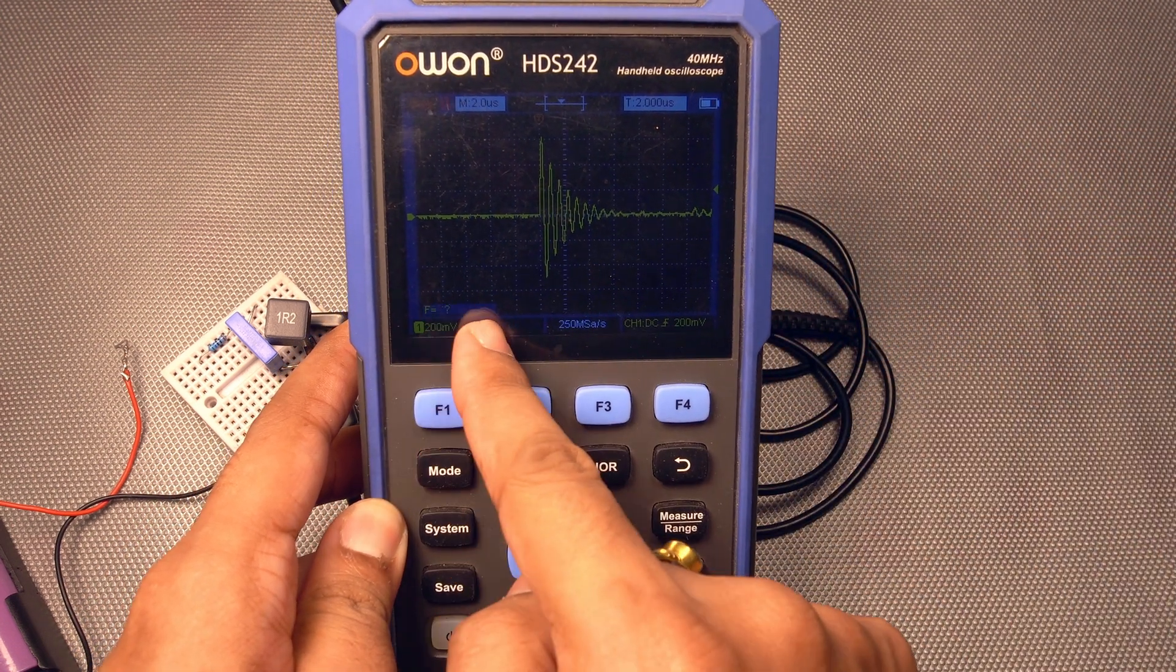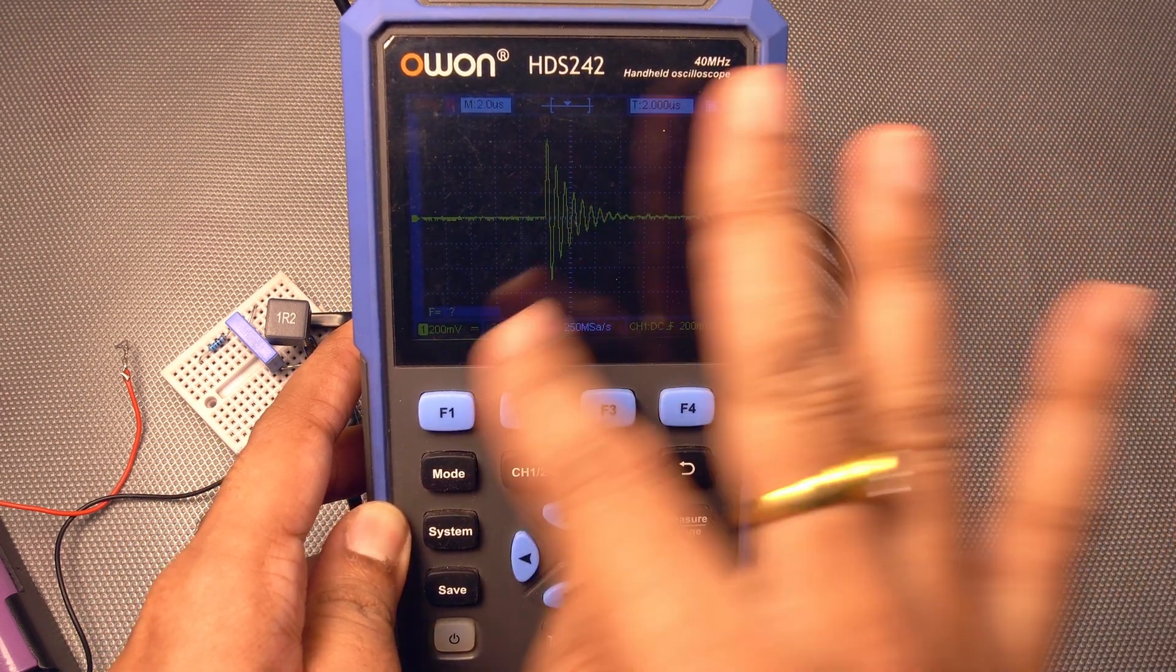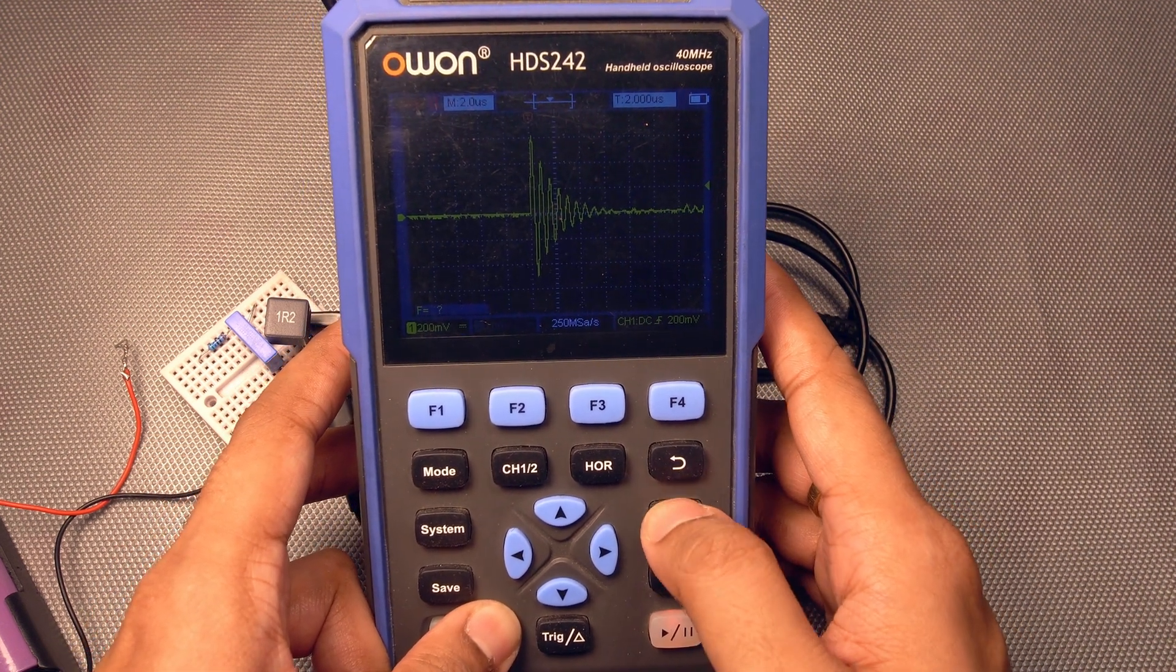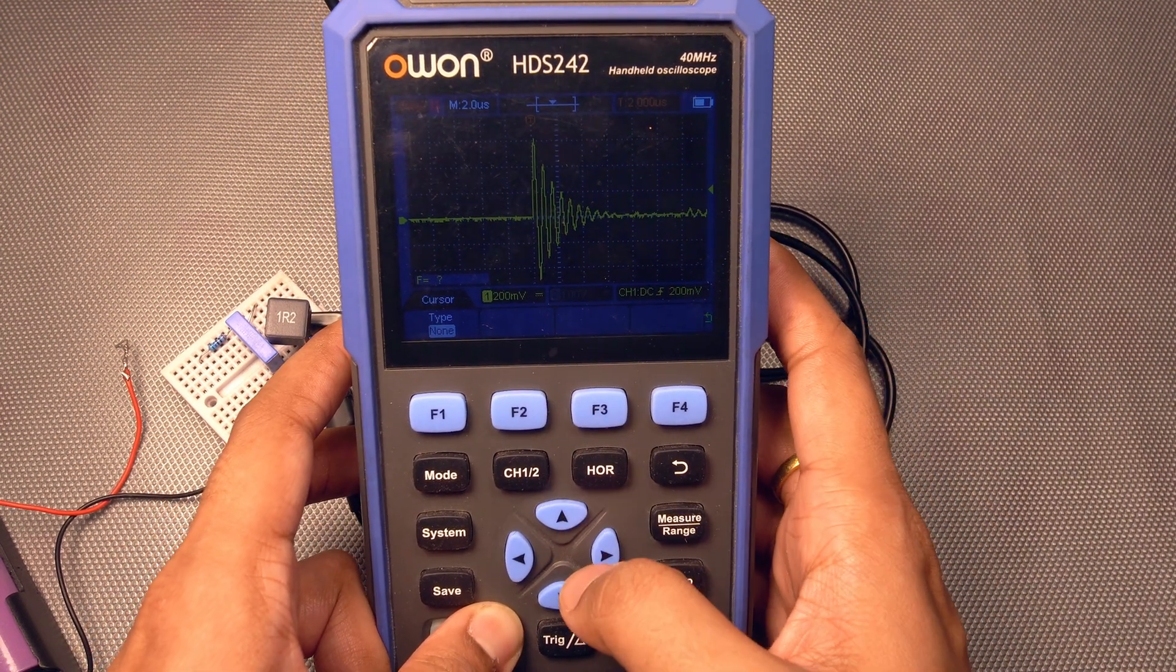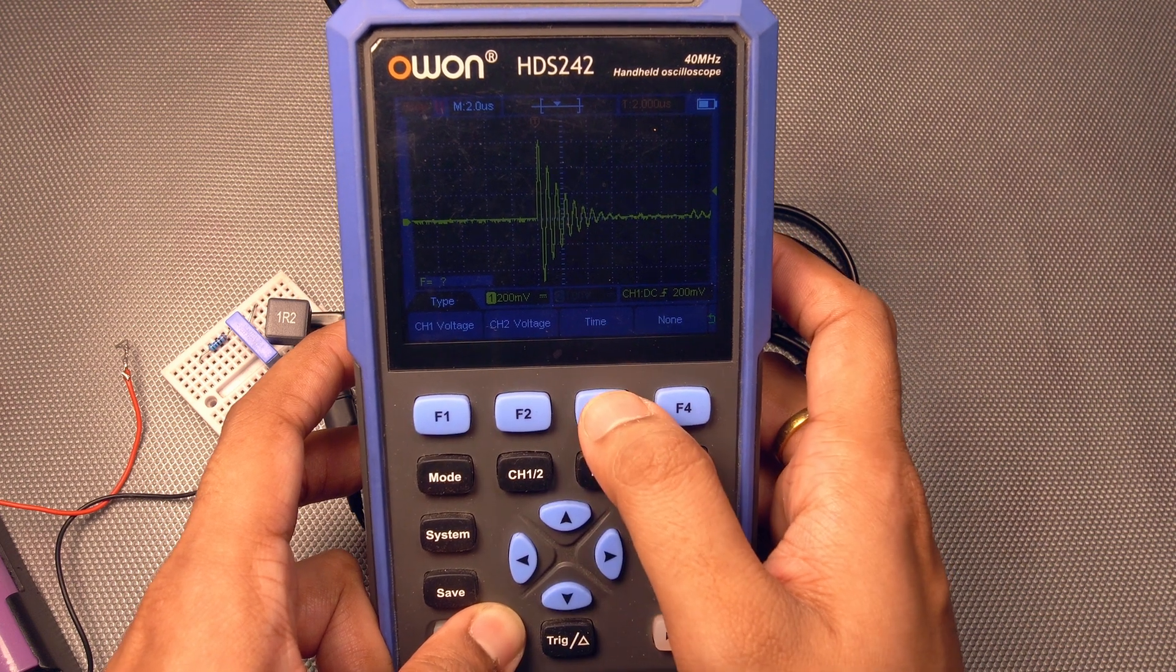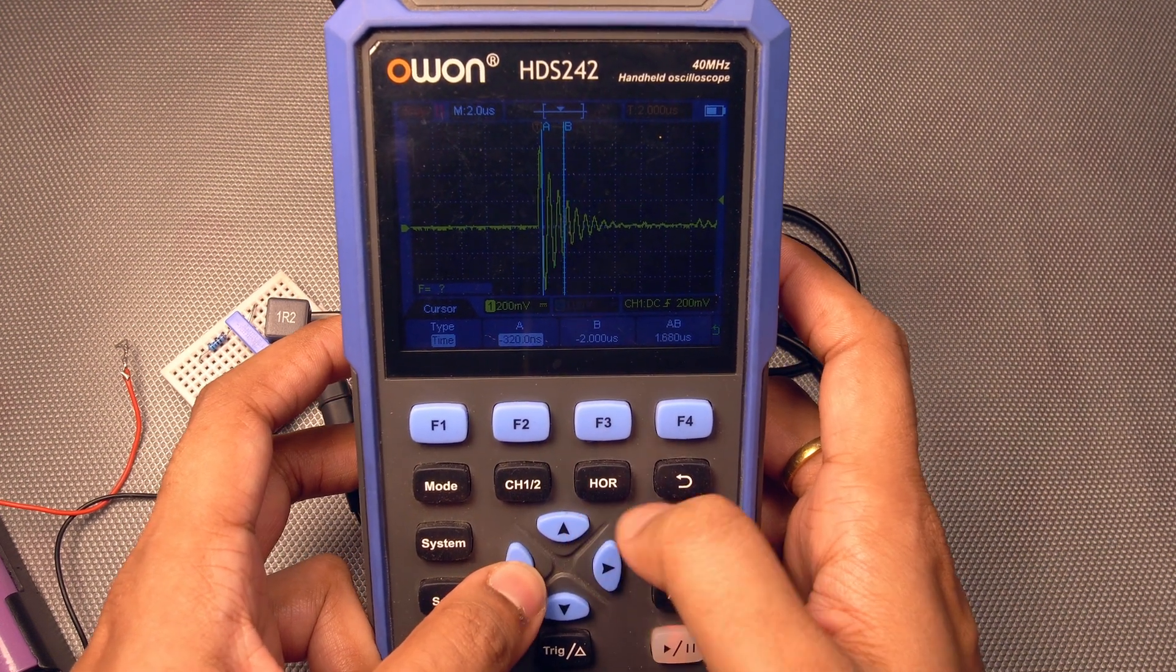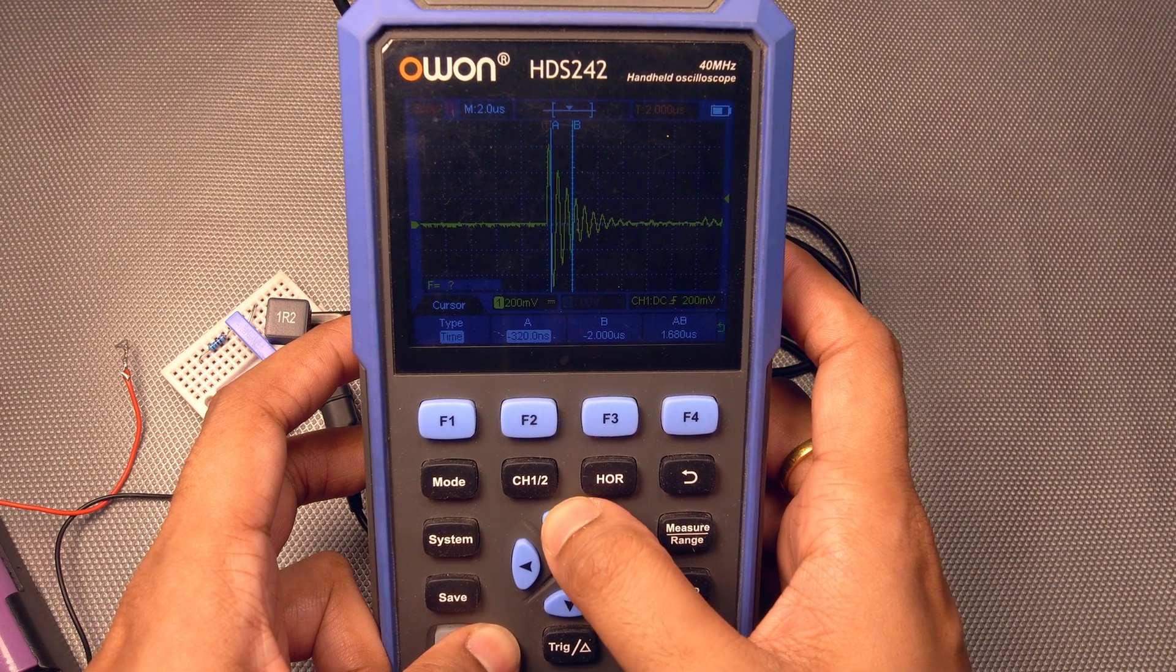Now it's supposed to calculate the frequency in here too, but I don't know why it's not calculating it. But nothing to worry, we will use cursors. Time cursor and we will, let us increase the time base a bit.